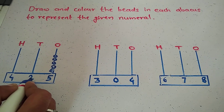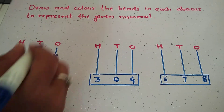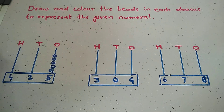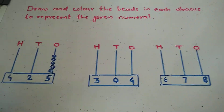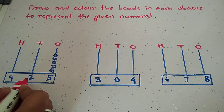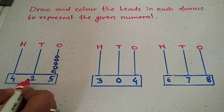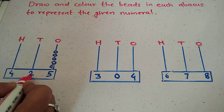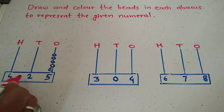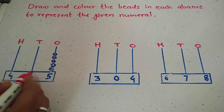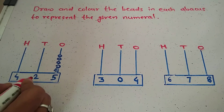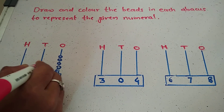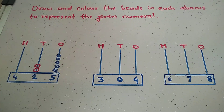Next, tens place. Draw and color the beads. Which number is in the tens place? Two. Draw the beads — two: one, two.